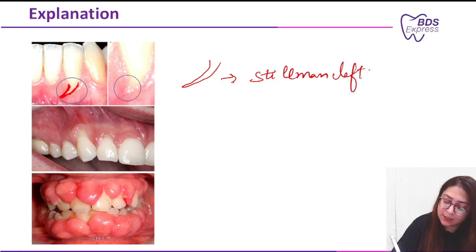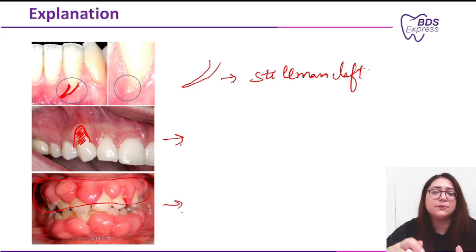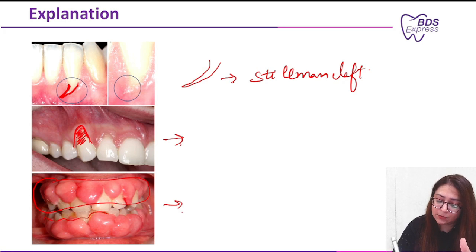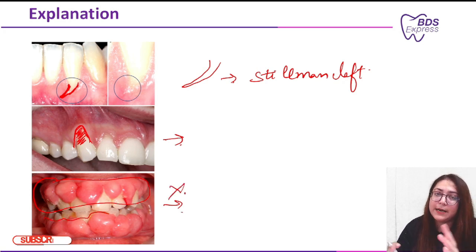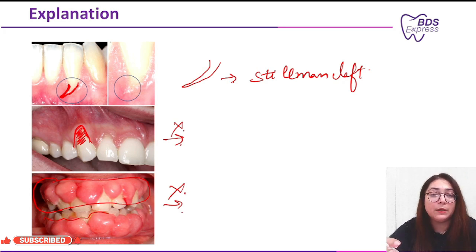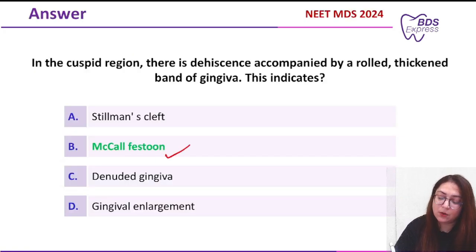The next option given was denuded gingiva — that is normal recession where the gingiva is denuded. Option D was gingival enlargement, which could be inflammatory, non-inflammatory, or drug-associated. So it is completely ruled out from the options. There could be a confusion between Stillman's cleft and McCall's festoon, but always remember this type of appearance. Coming back to the question, the correct answer is McCall's festoons.